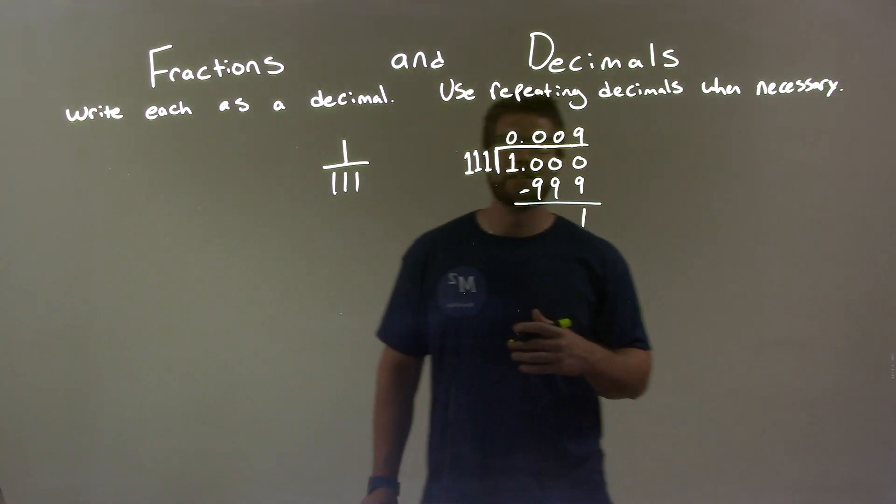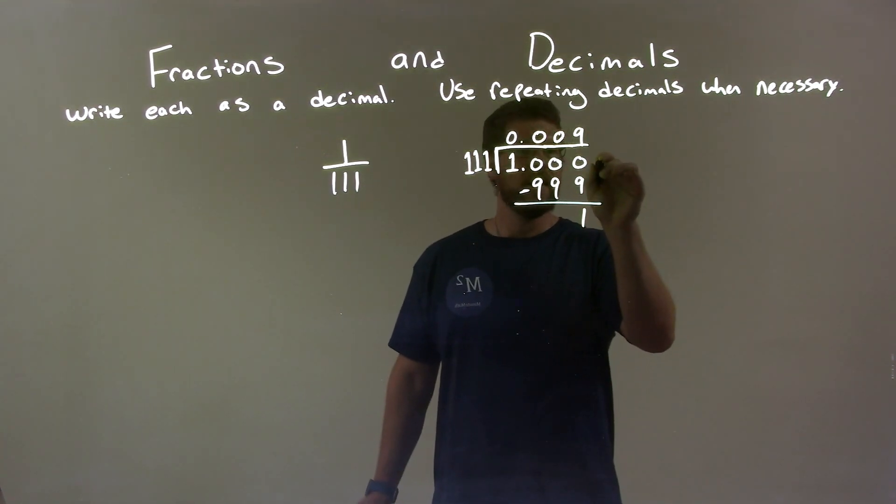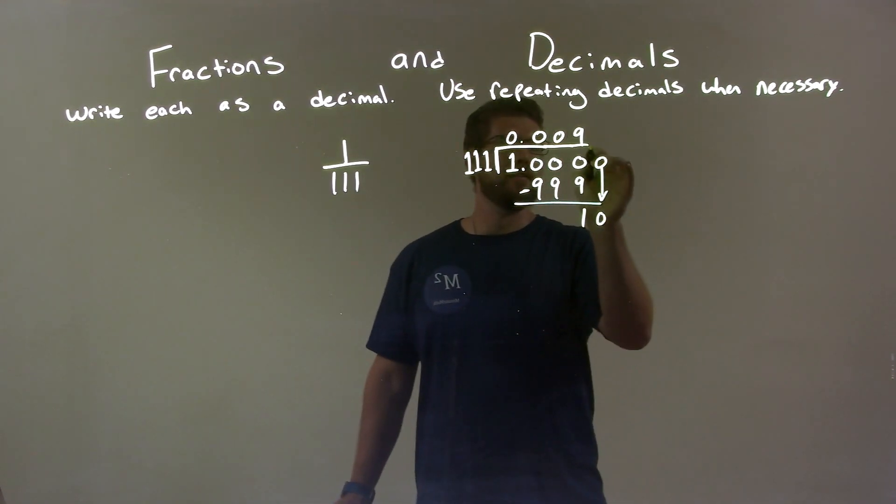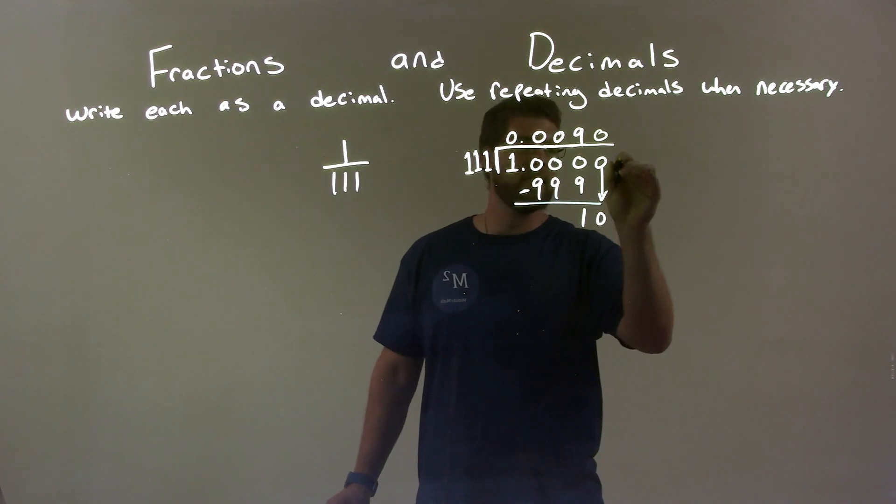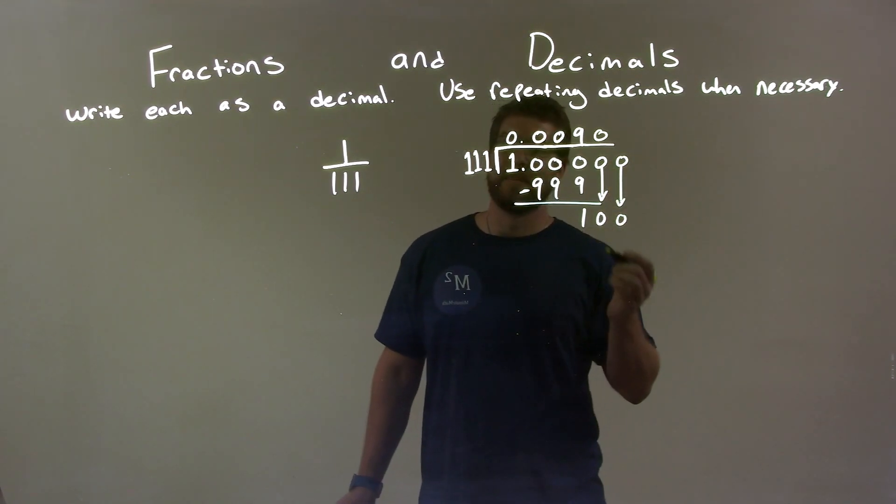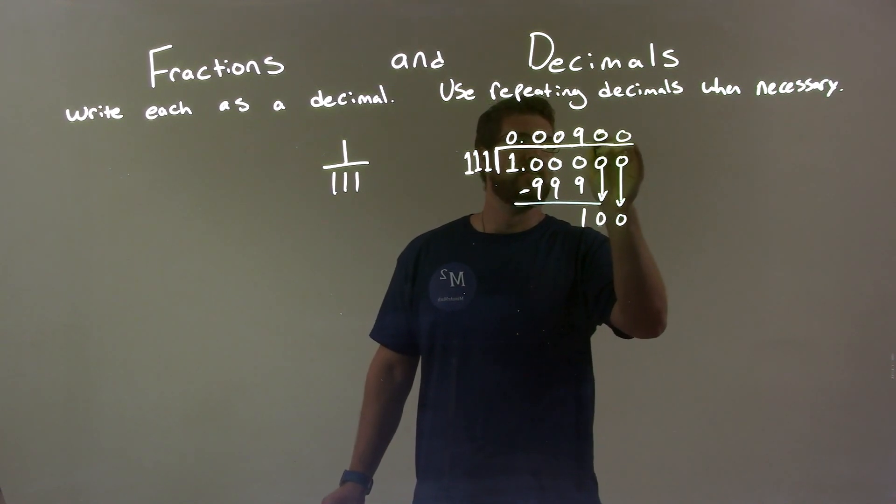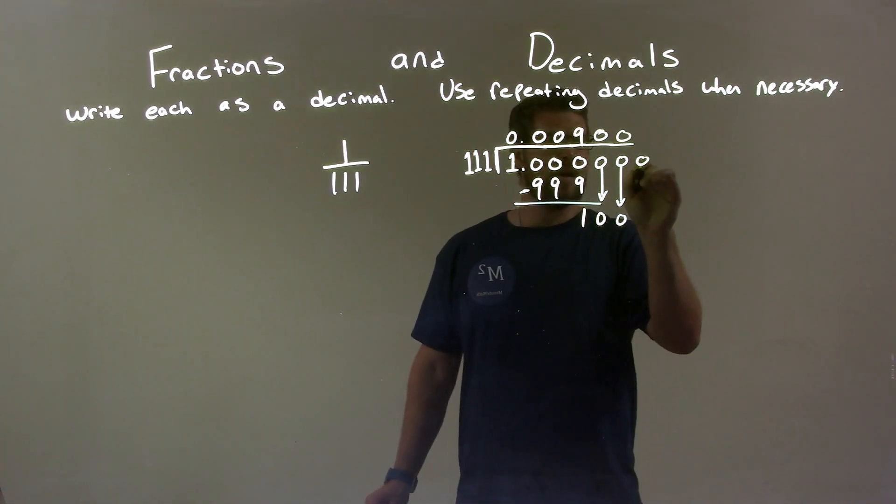And the process is actually going to repeat here, so we'll see, right? We add another 0 right there. 111 goes into 10. Well, it can't. So we add another 0. 111 goes into 100. It can't, right? We add another 0. So we add another 0 here.